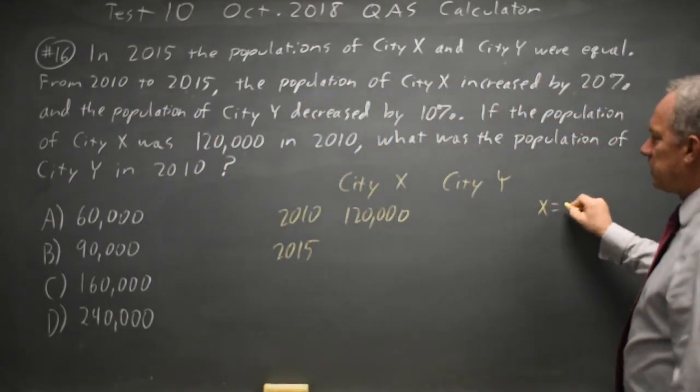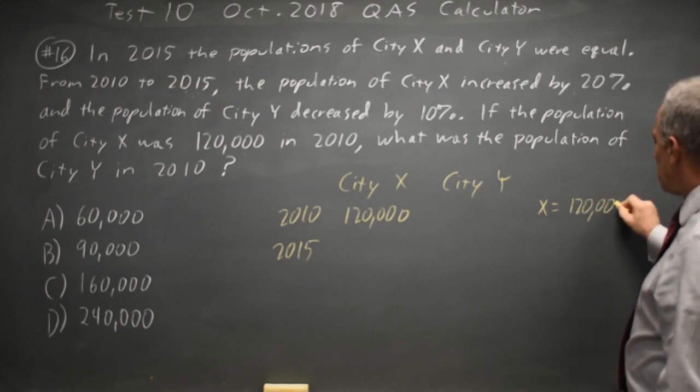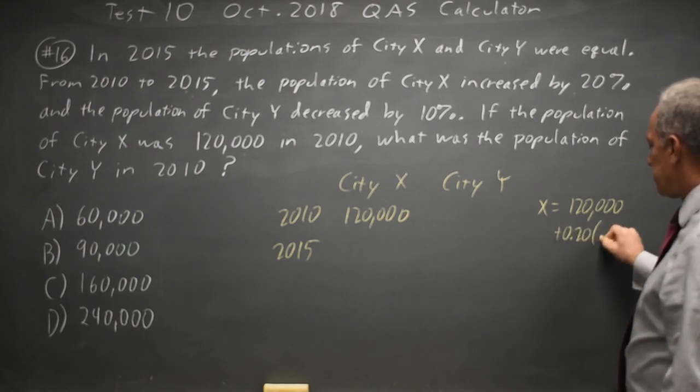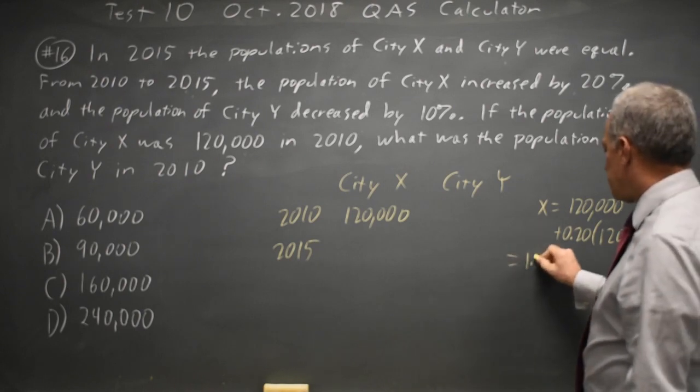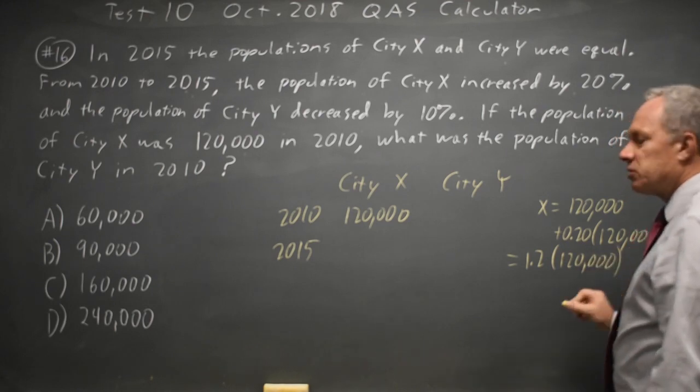So the 2015 value is X equals 120,000 plus 20%, which is 0.2 times 120,000, which is 1.2 times 120,000. You can do that on your scientific calculator or graphing calculator, and that's 144,000.